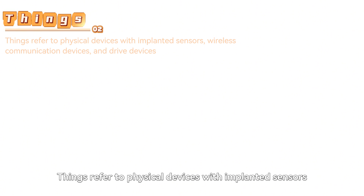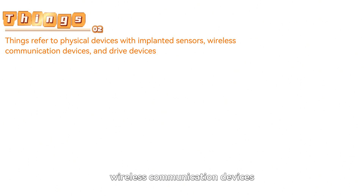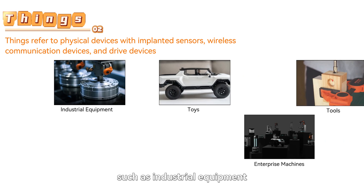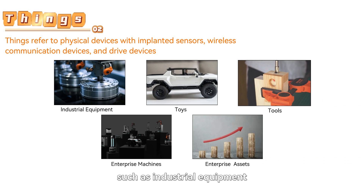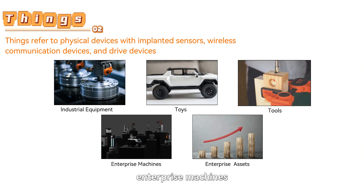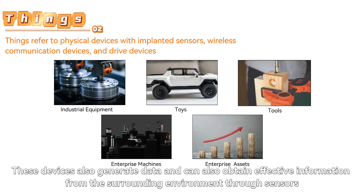2. Things. Things refer to physical devices with implanted sensors, wireless communication devices, and drive devices such as industrial equipment, toys, tools, enterprise machines, or assets. These devices also generate data and can obtain effective information from the surrounding environment through sensors.